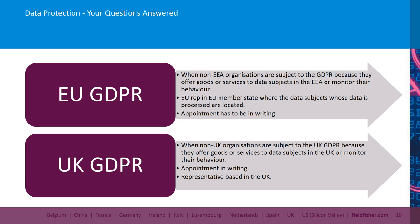If you are a controller based outside of the EEA but subject to the GDPR by virtue of its extraterritorial effect, you will have to appoint an EU representative. After the end of the Brexit implementation period on 31st December 2020, your EU representative cannot be located in the UK, because the UK is no longer in the EU. You will have to appoint your EU representative in another EU member state — specifically one where the data subjects whose data are processed in relation to your offering of goods and services or whose behaviour is monitored are based. Remember to designate the representative in writing, and note that EU regulators may address the EU representative in addition to or instead of you.